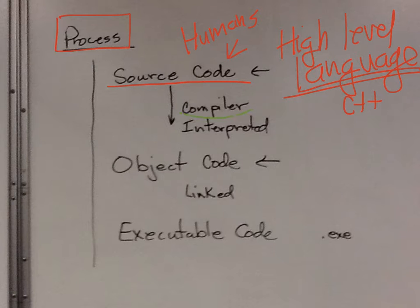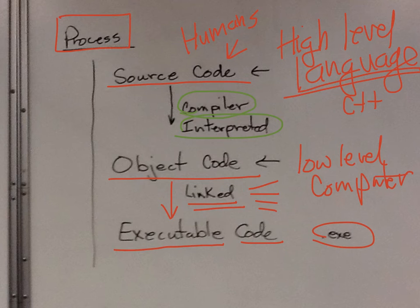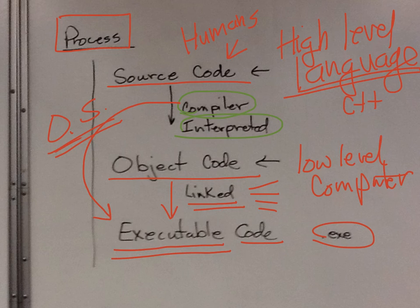Then we take either a compiler or an interpreter to convert it into object code. This is more low-level, a generic term, but this is something the computer will understand. Not so much as a human, but a computer will understand. Then you add in other code, which really makes sense, pre-written things. And you'll, what they call, link it, into an executable code. This is something the computer can execute. The compiler will compile the executable code based on the operating system. So if it compiles it for Windows, then it needs to run on Windows. If it compiles it for a Macintosh, then it needs to run on a Macintosh.